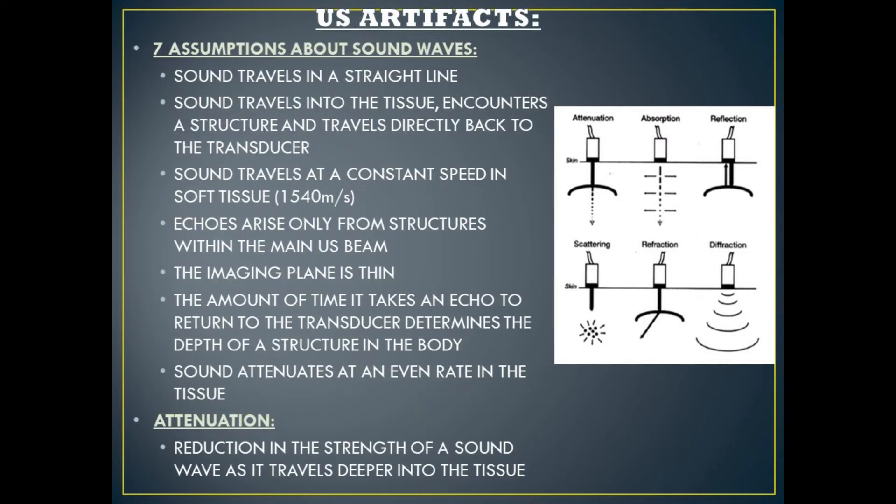Ultrasound artifacts occur because one of the seven assumptions that ultrasound machines make about sound waves fails to occur. Assumption one is that sound travels in a straight line. Assumption two, sound travels into the tissue, encounters a structure, and travels directly back to the transducer. Assumption three, sound travels at a constant speed in soft tissue, which is 1540 meters per second.